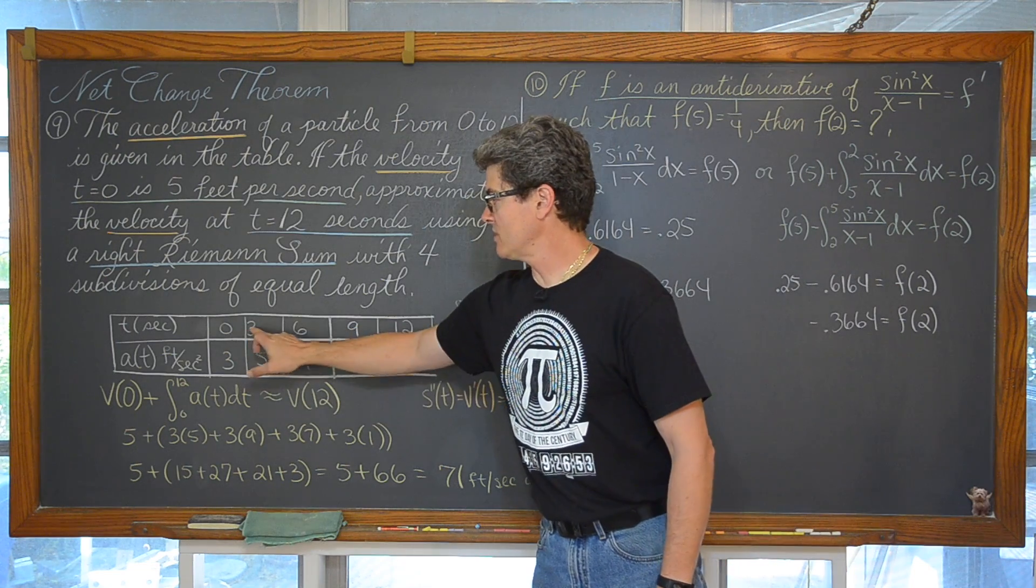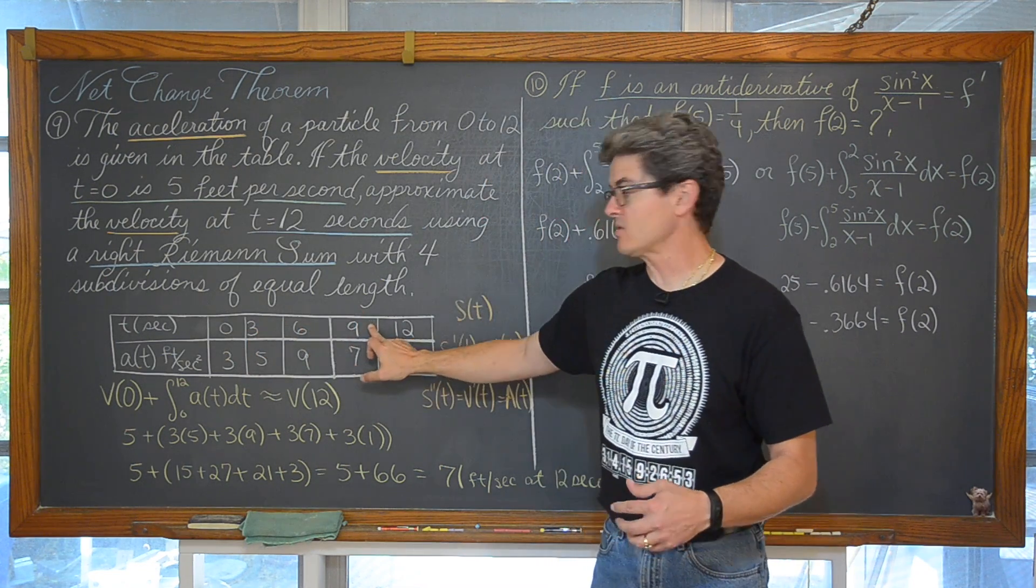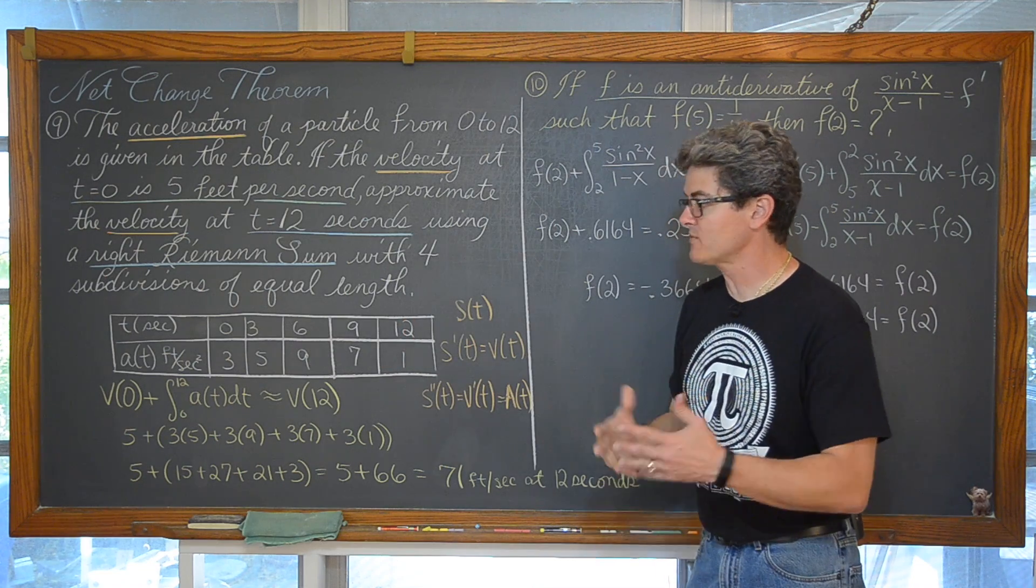And do that with a right Riemann sum using 4 subdivisions of equal length. So we have a subdivision of 3. And then another 3 gets you to 6. Another 3 gets you to 9. And another 3 gets you to 12. So we have equal subdivisions.